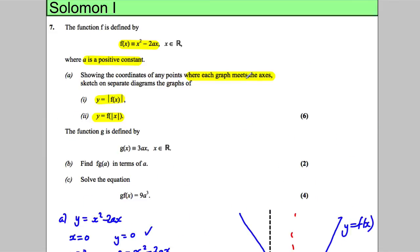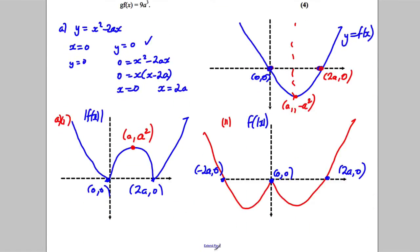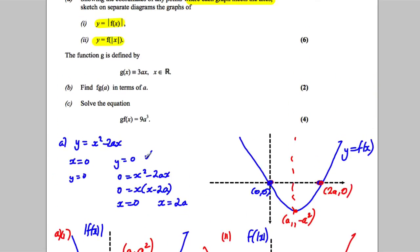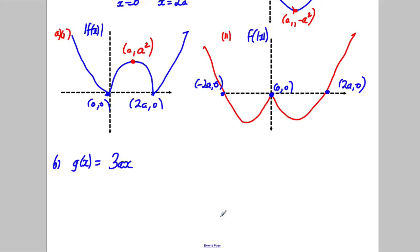Okay, continuing on, the function g is defined by the following. So for part b, g(x) = 3ax, and it says find f(g(a)) in terms of a.